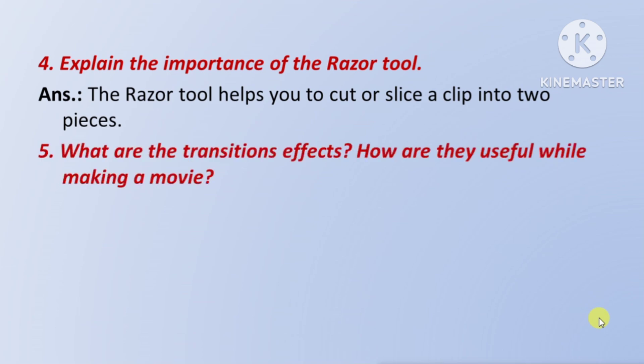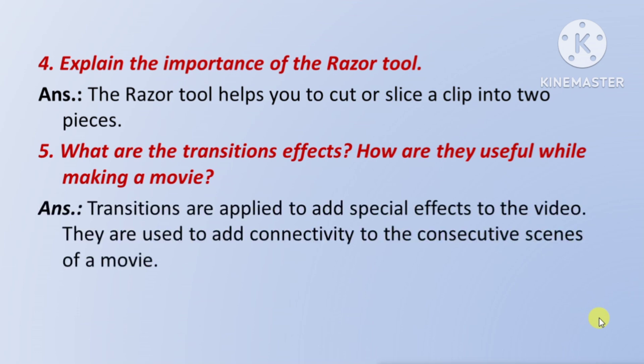Next question: what are the transition effects? How are they useful while making a movie — means transition effects kya hote hain, aur jab aap ek movie bana rahe hote hain to us samay ye kaise useful hota hai? Answer: transitions are applied to add special effects to the video — means transition ko video par apply kiya jata hai video par special effects dene ke liye. They are used to add connectivity to the successive scenes of a movie — means jo scenes hote hain movie mein unke beech connectivity ko dikhane ke liye iska prayog kiya jata hai.